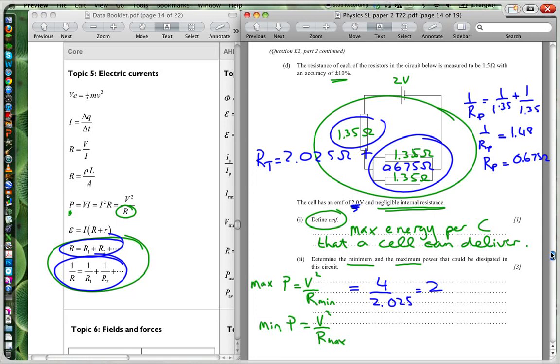When I divide 4 divided by my answer, I get 1.975. And when I do it to two significant figures, I get 2.0 watts. Okay. So that was for my minimum R.